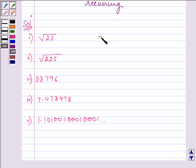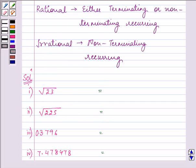Now we know that 23, the root of 23 cannot be found out and it will be a non-terminating, non-recurring decimal. So that means the first part is that it is an irrational number.